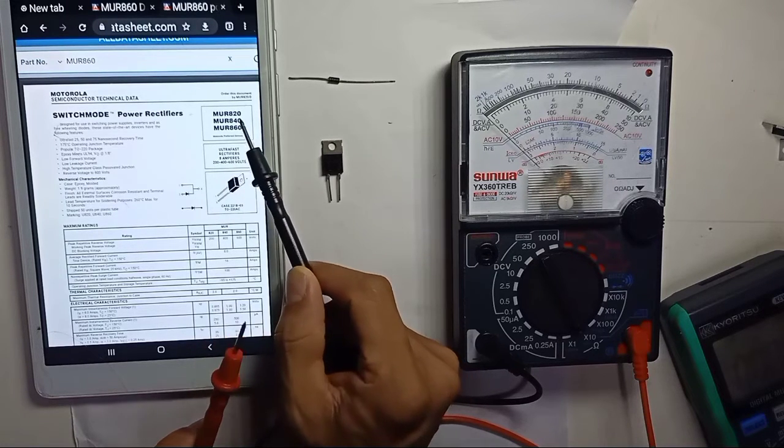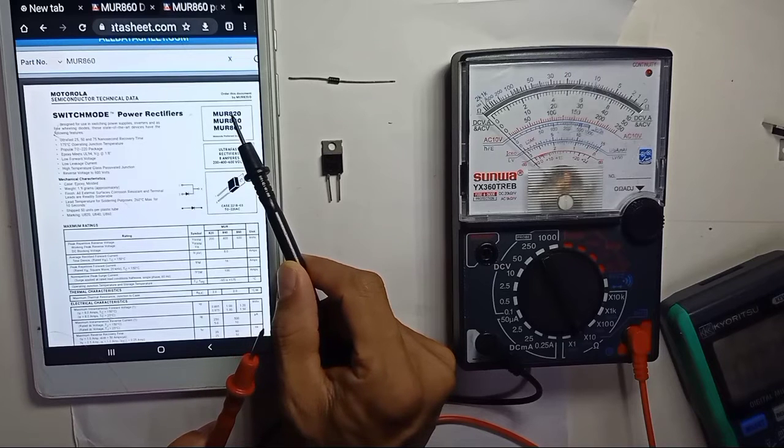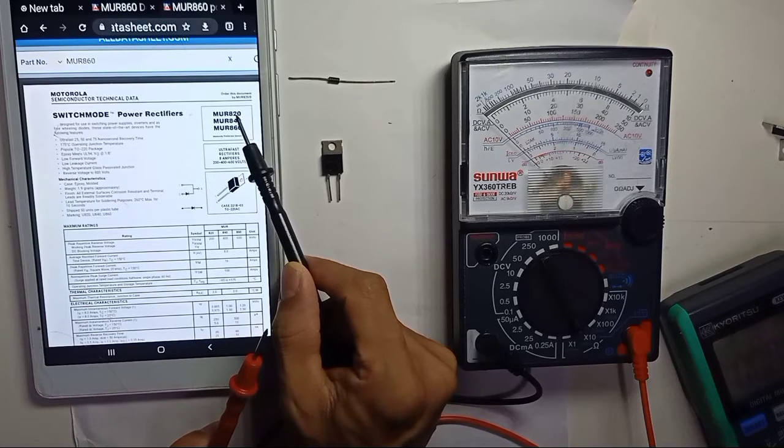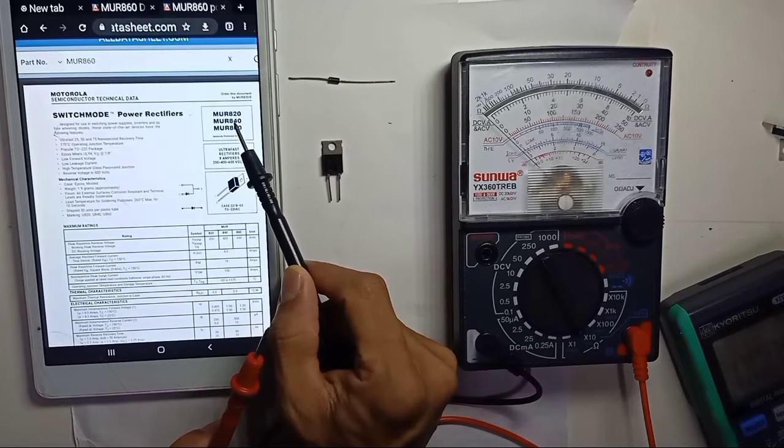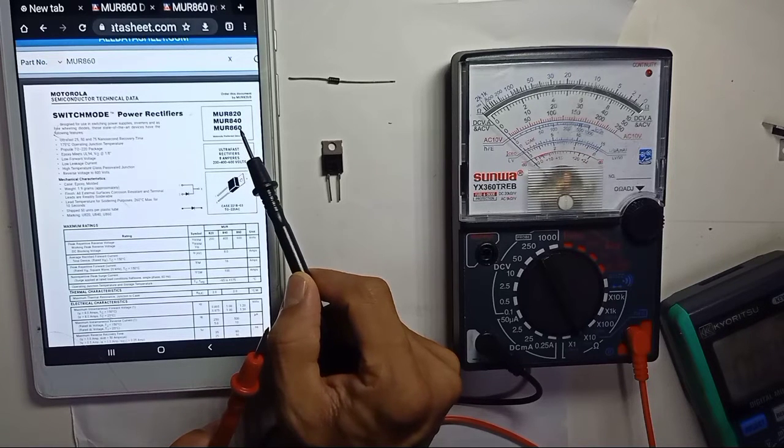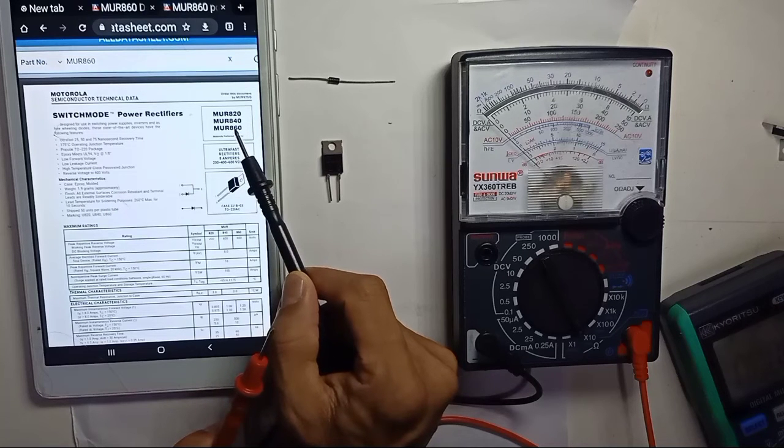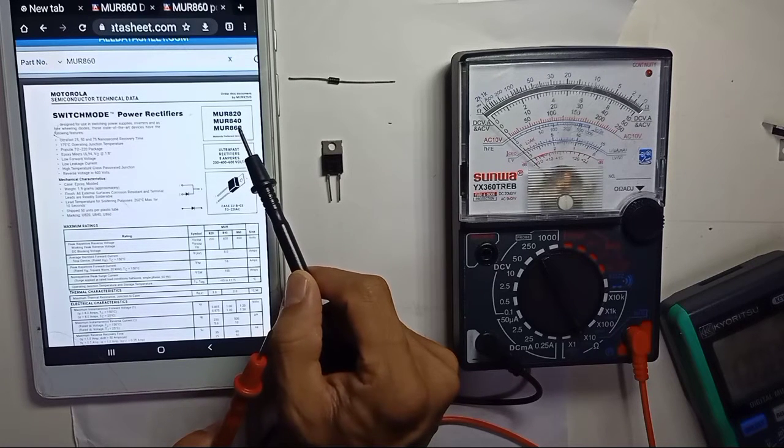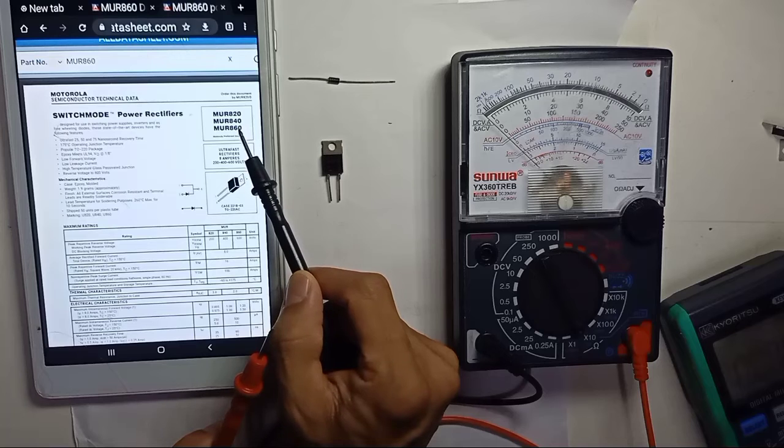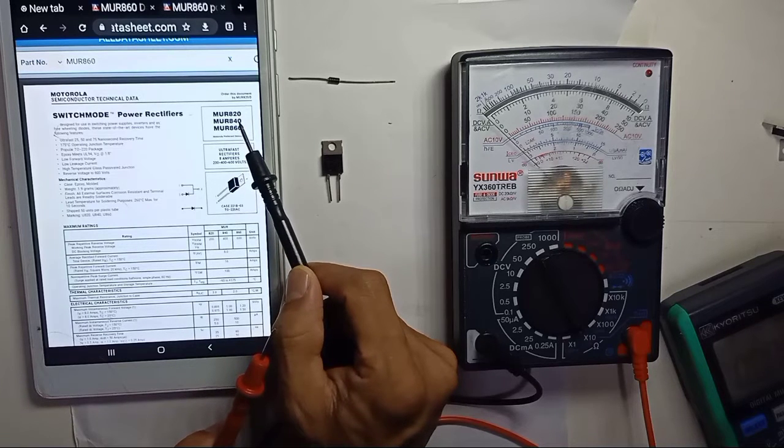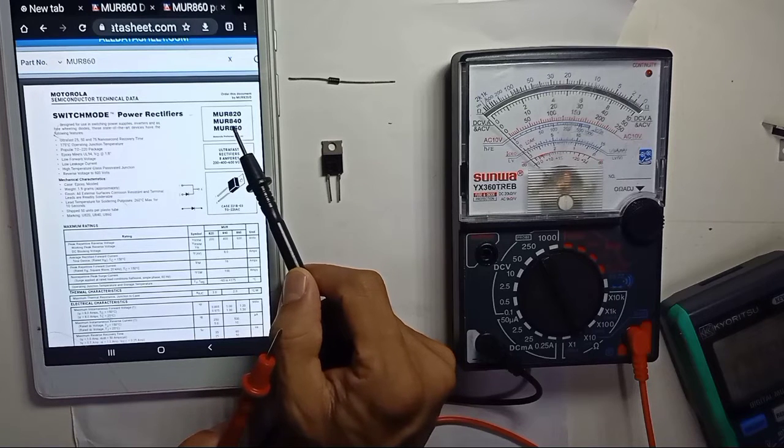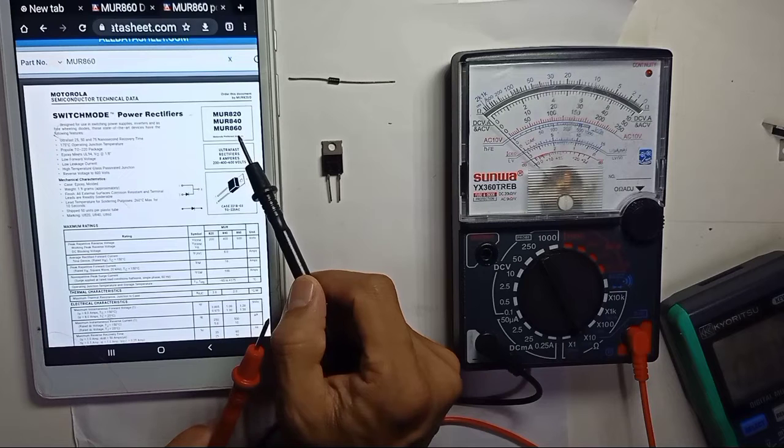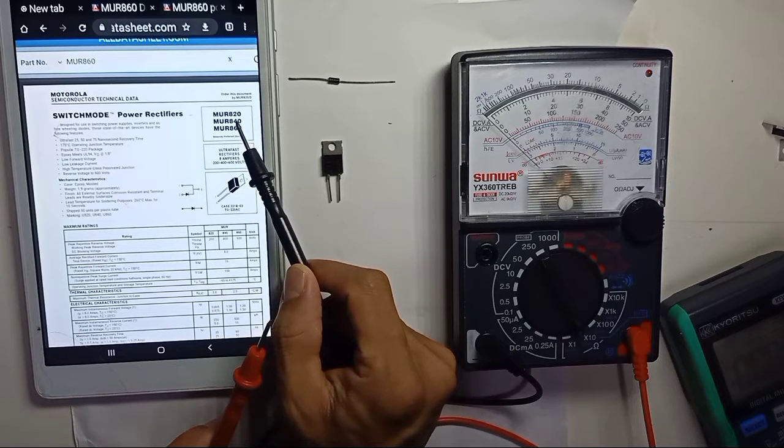If you have 820 and you don't have it available, you can replace it with 840 or 860. But if you're using 860, you cannot replace it with 840 or smaller than your original usage. If you want to replace your diode, you must choose a higher value than what you have.